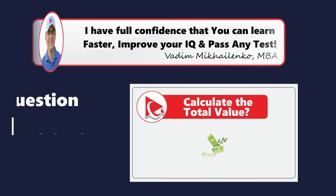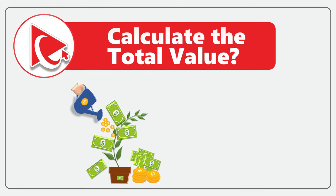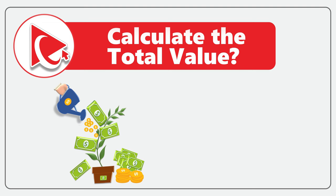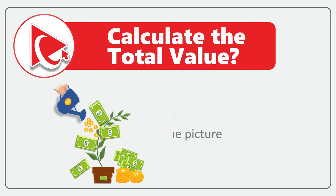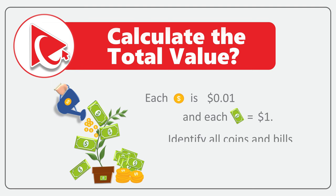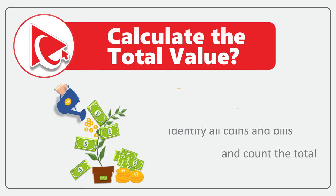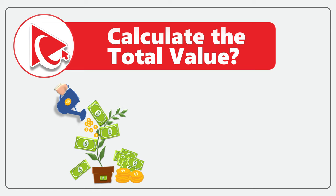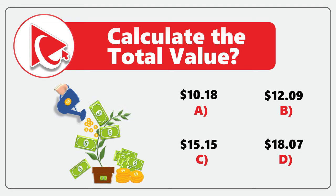Have you ever dealt with the money tree? Now it's your opportunity to check your attention to detail. You're presented with a money tree enterprise and need to calculate the total value of money in the picture. Each coin is one cent and each bill equals one dollar. You need to identify all coins and bills and count the total value. Choices are: A) $10.18, B) $12.09, C) $15.15, and D) $18.07.